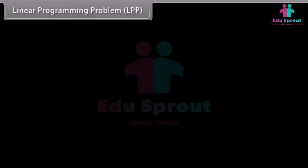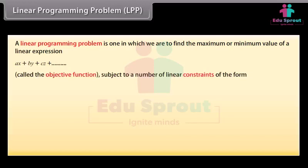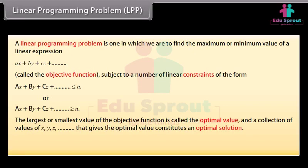Linear Programming Problem (LPP). A linear programming problem is one in which we are to find the maximum or minimum value of a linear expression Ax plus By plus Cz plus and so on, called the objective function, subject to a number of linear constraints of the form Ax plus By plus Cz plus and so on less than or equal to n, or greater than or equal to n. The largest or smallest value of the objective function is called the optimal value, and a collection of values of x, y, z and so on that gives the optimal value constitutes an optimal solution. The variables x, y, z and so on are called the decision variables.